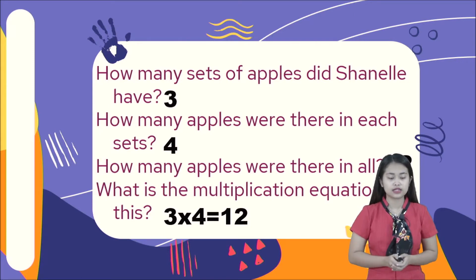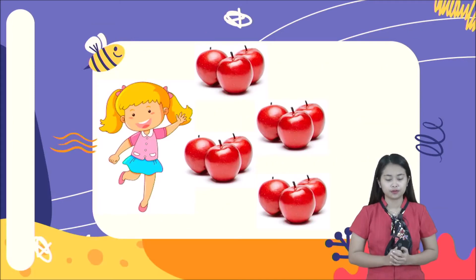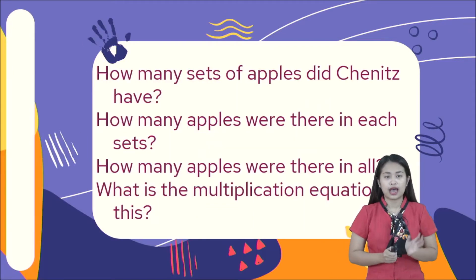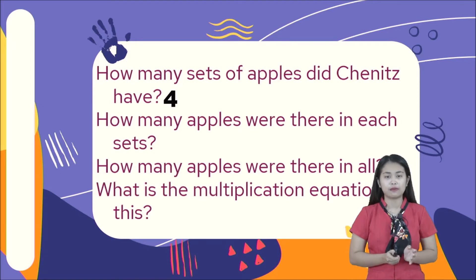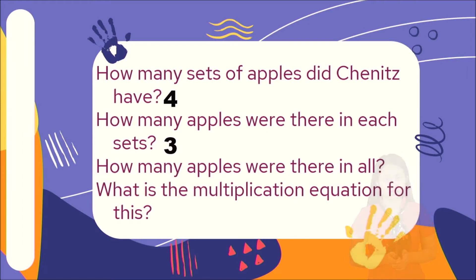The multiplication equation for this is three times four equals twelve. Now let us move on to the next situation. That girl is Chenitz. She packed four sets of apples and every set has three apples in it. How many sets did Chenitz have? Four sets. How many apples in each set? Three. So four times three equals twelve.